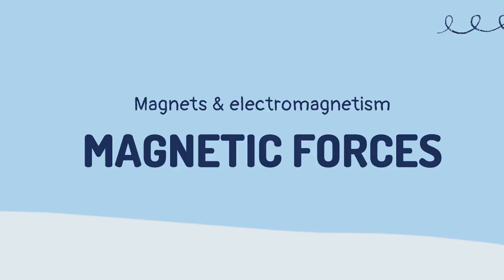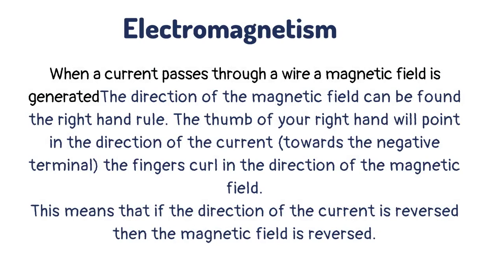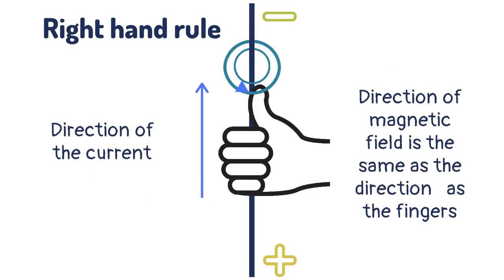Magnetic forces. When a current passes through a wire, a magnetic field is generated. The direction of the magnetic field can be found using the right-hand rule. The thumb of your right hand will point in the direction of the current towards the negative terminal, and the fingers curl in the direction of the magnetic field. This means that if the direction of the current is reversed, then the magnetic field is reversed.